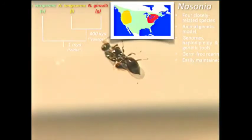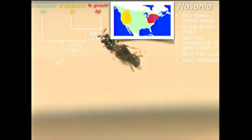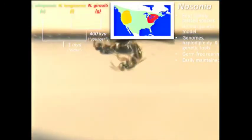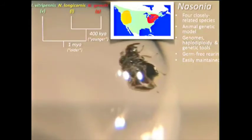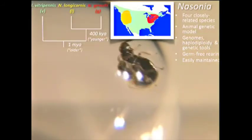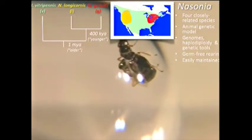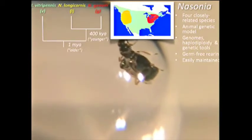The species distribution is also noteworthy. Vitripennis, which will be a cornerstone of the topic today, exists throughout North America. Longicornis and giralti, another piece of the puzzle today, exist sympathetically within Nasonia vitripennis' range — giralti on the east coast, longicornis on the west coast.